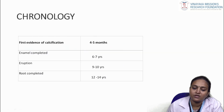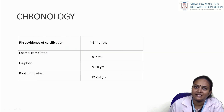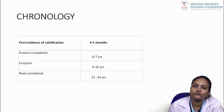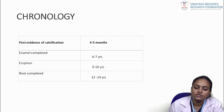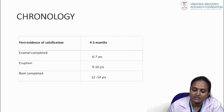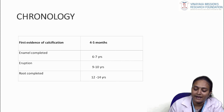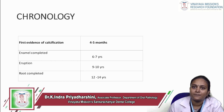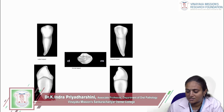Coming to the chronology of the maxillary canine: first evidence of calcification starts at 4 to 5 months in babies. Enamel is completed at age 6 to 7 years. Eruption age is 9 to 10 years, and root completion is by 12 to 14 years.